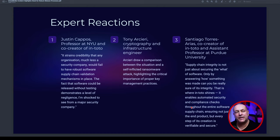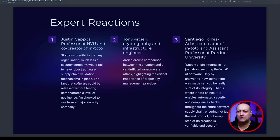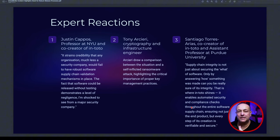Experts around the world have chimed in. One is Justin Kapos, a professor at New York University and co-creator of the in-toto framework. He says it strains credibility that any organization — much less a security company — would fail to have robust software supply chain validation mechanisms in place. The fact that the software could be released without correct testing actually demonstrates a level of negligence. He says he's shocked to see this from a major security company.